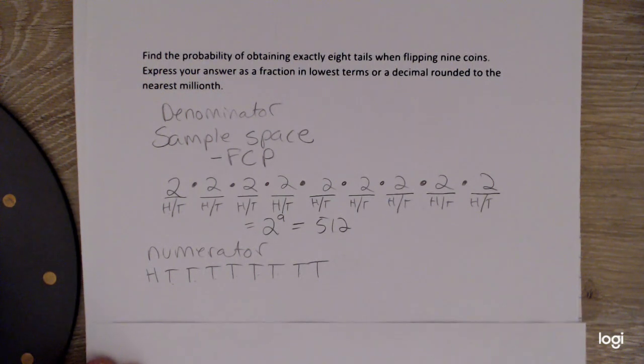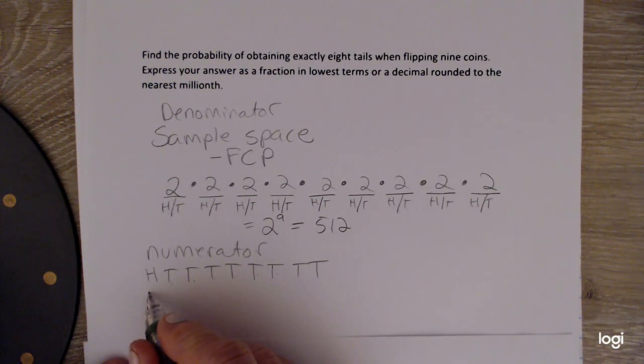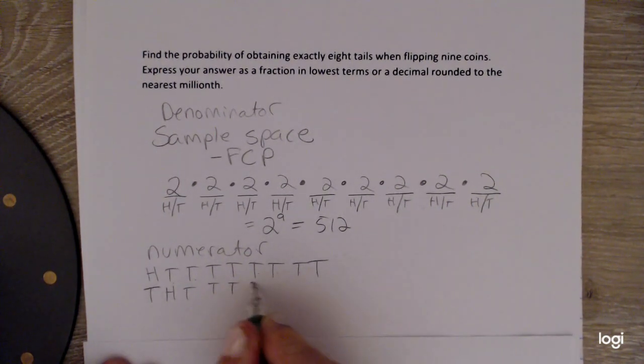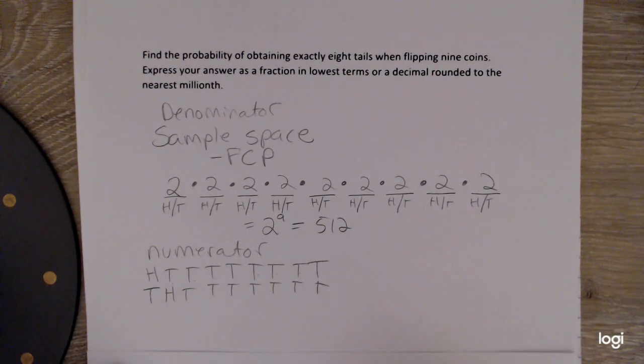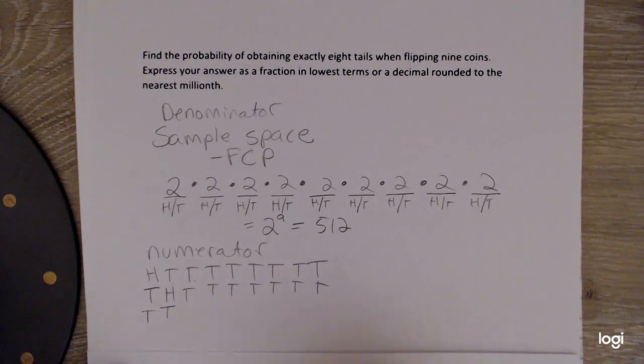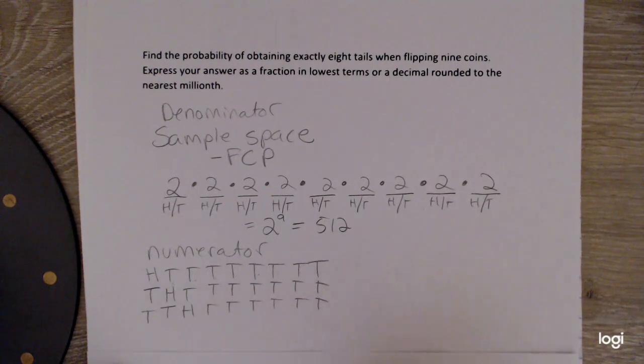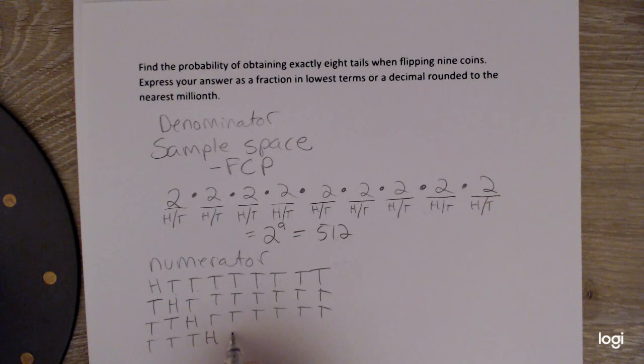Now, clearly, this isn't the only possible outcome for flipping nine coins. I could have a tail on the first flip, and then a head on the second flip, and then the rest of them be tails. Or the first two could be tails, and then the third one could be a head, and the rest be tails, and so on. Hopefully, at this point,